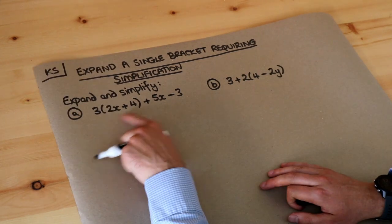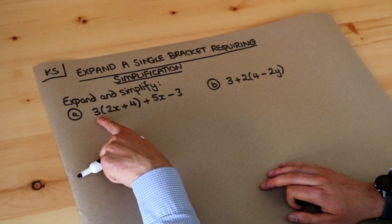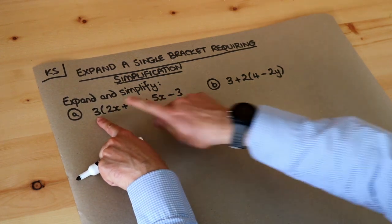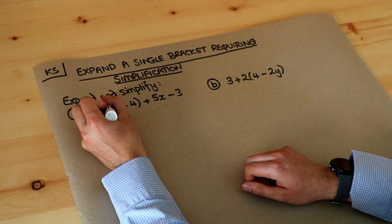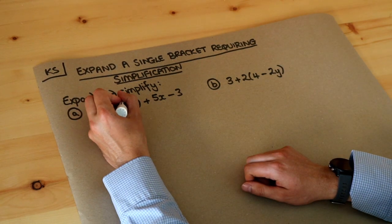So remember to expand out a single bracket we do the thing from the bracket multiplied by each of the things inside that bracket so the 3 gets multiplied by the 2x and 3 gets multiplied by the 4.